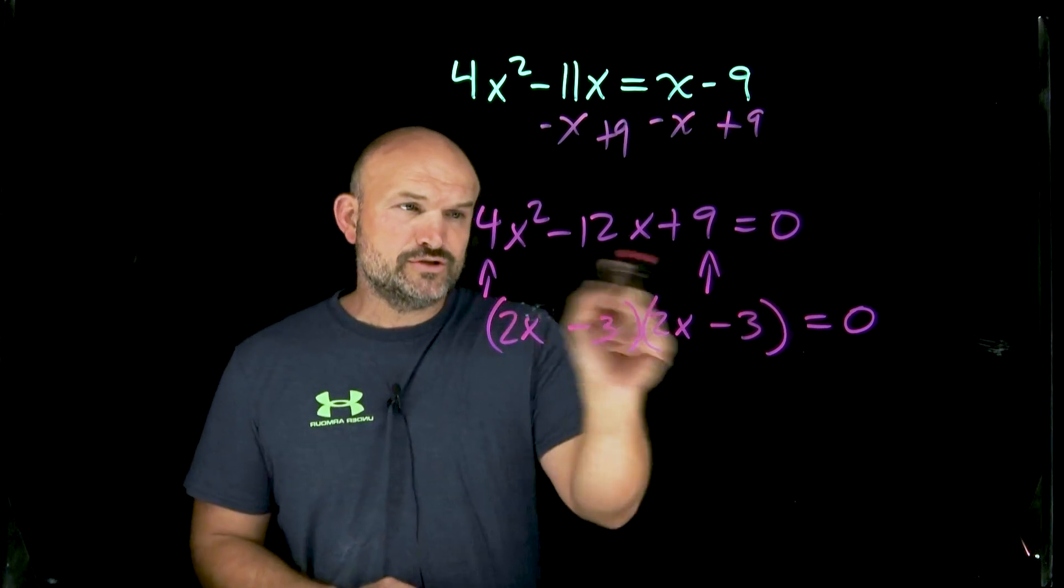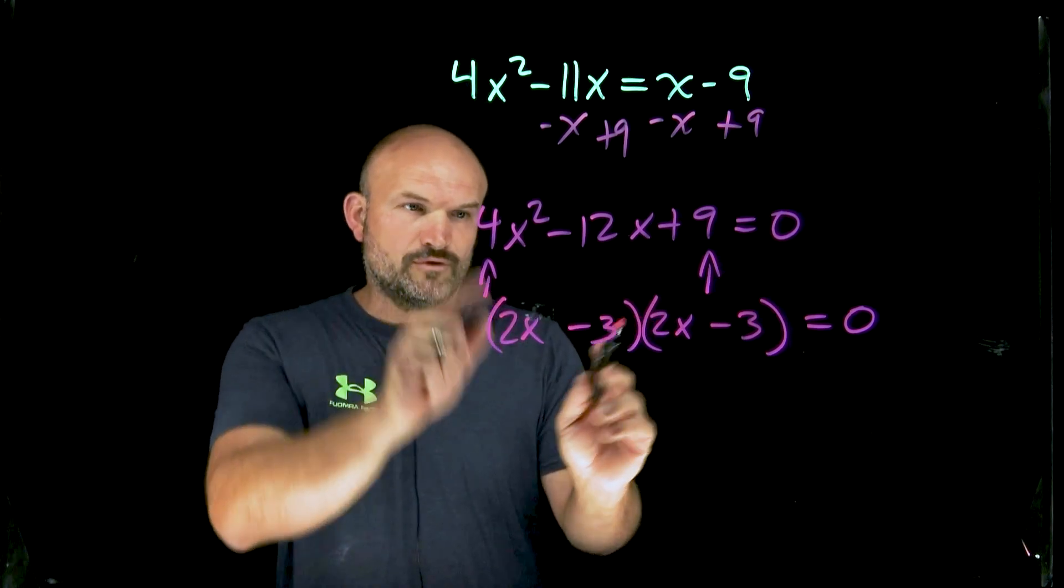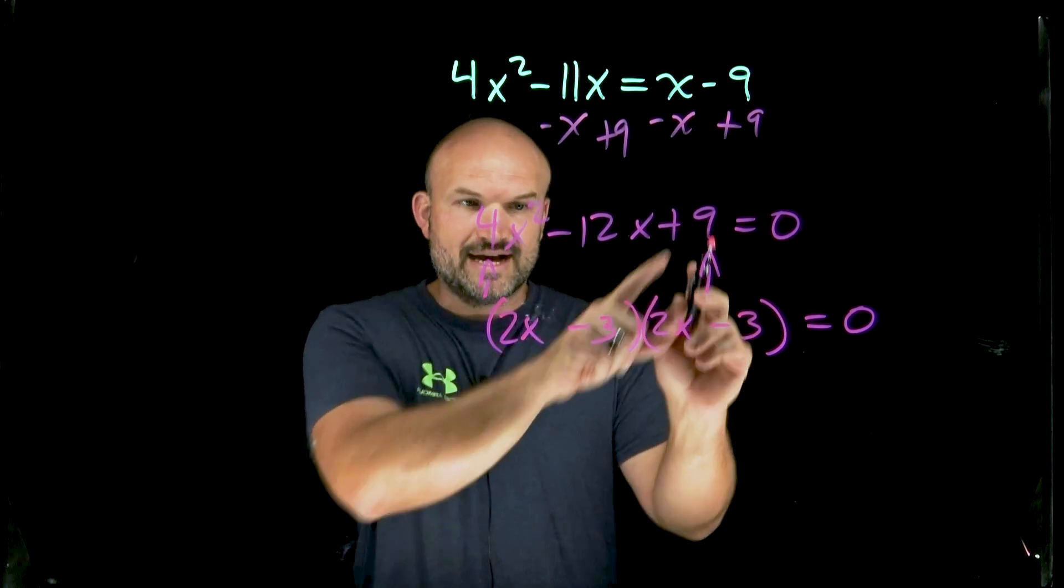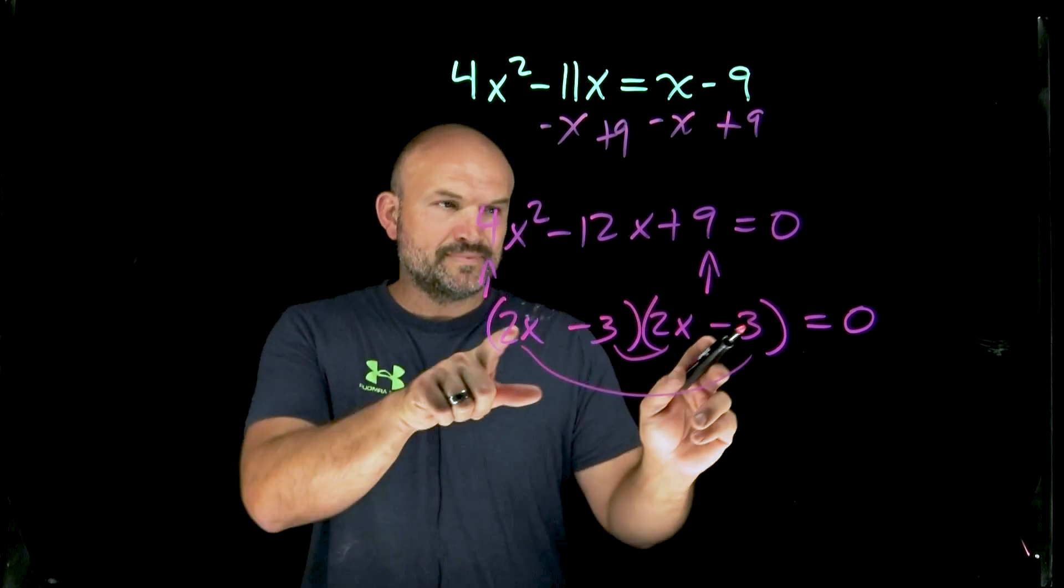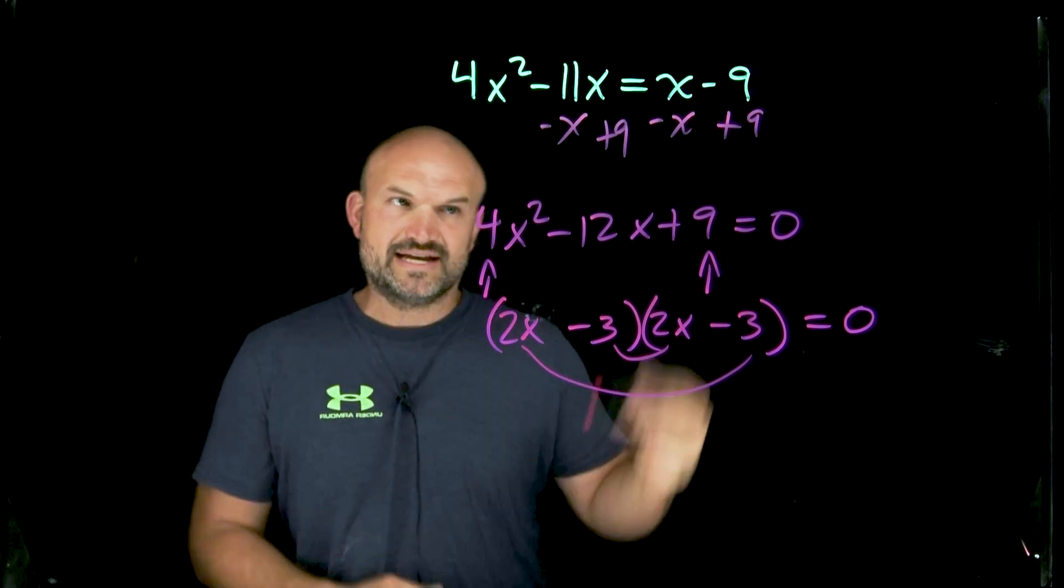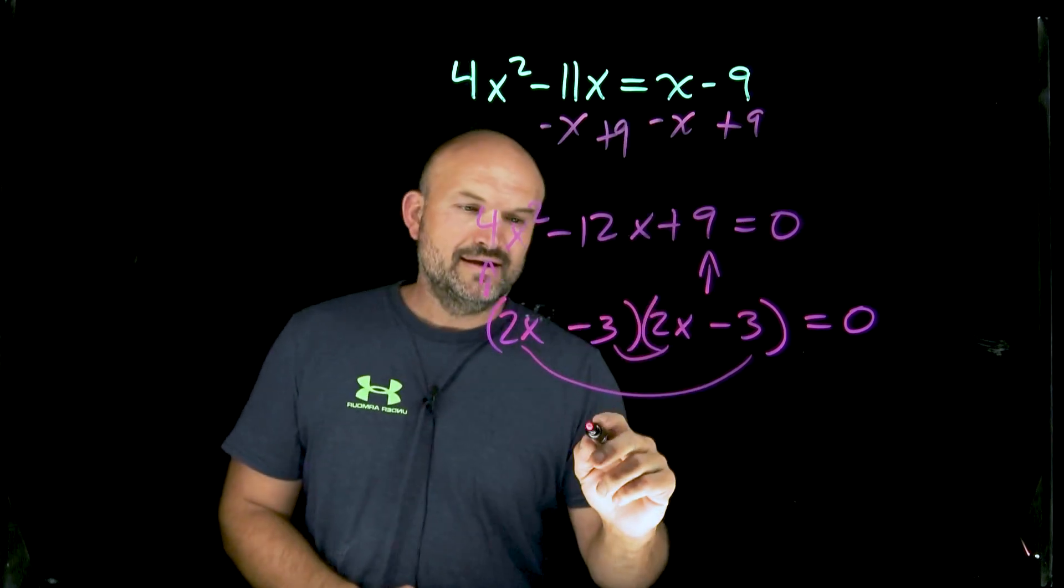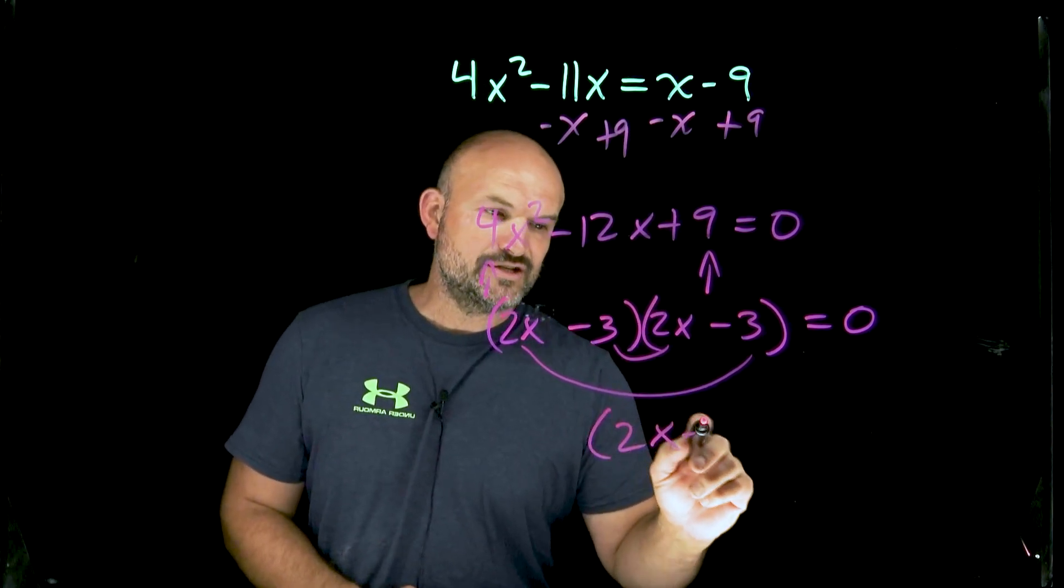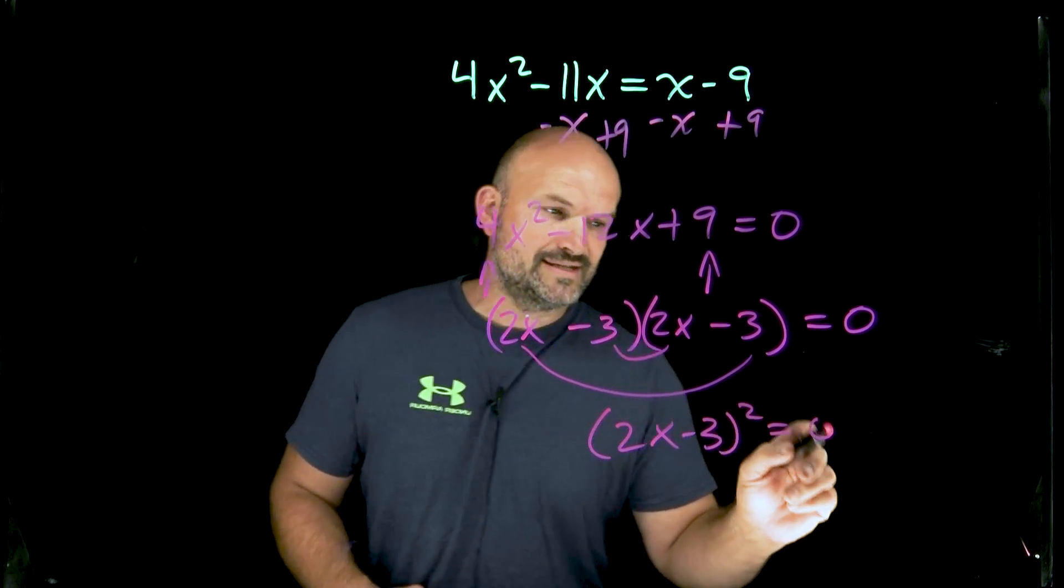And again, if you just want to do a mental check, just turn it back over. Two X times two X is four X squared, negative three times negative three is nine, and then do the inner and the outer. That's a negative six X. That's a negative six X. Negative six X plus negative six X is going to be a negative 12 X. Now I can go ahead and rewrite this as two X minus three quantity squared is equal to zero.